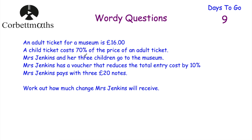Let's have a look at our next question. An adult ticket for a museum costs £16, and a child ticket costs 70% of the price of an adult ticket. Mrs Jenkins and her three children go to the museum. Mrs Jenkins has a voucher that reduces the total entry cost by 10%, and she pays with three £20 notes. How much change will Mrs Jenkins receive? This is a non-calculator question — press pause and try it now.